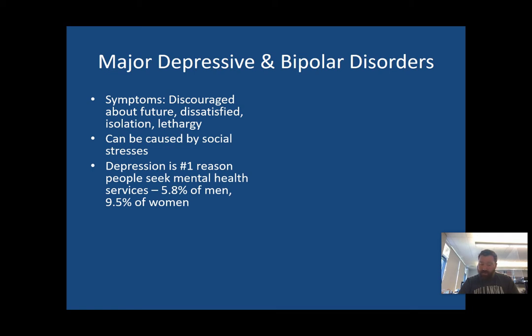From the DSM, 12-month prevalence rates of major depressive disorder in the U.S. is 7%. There are marked differences between age groups — those aged 18 to 29 are three times as likely to develop depression than individuals 60 or older. Females have one and a half to threefold higher rates than males, beginning in early adolescence. So this is truly a major illness.